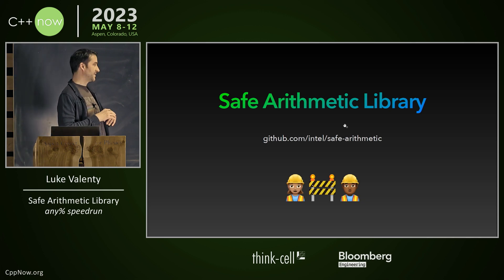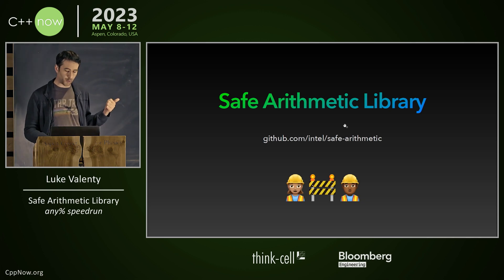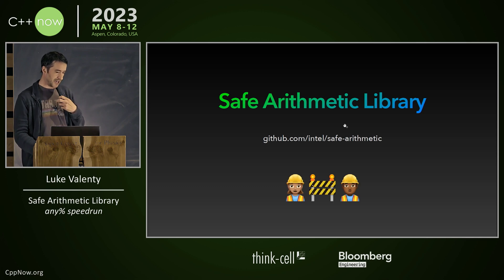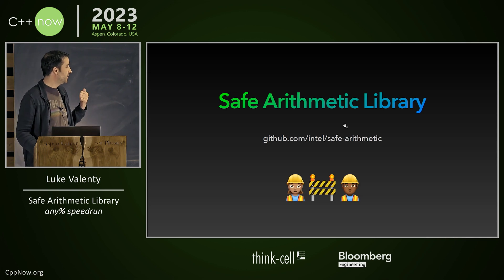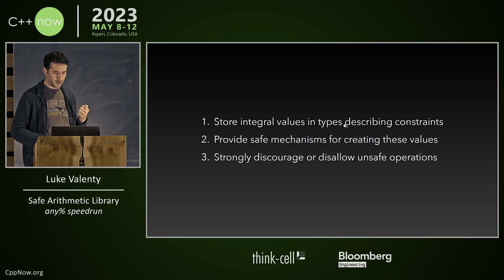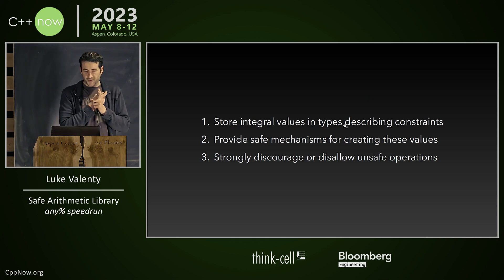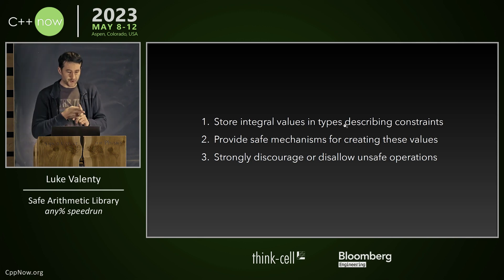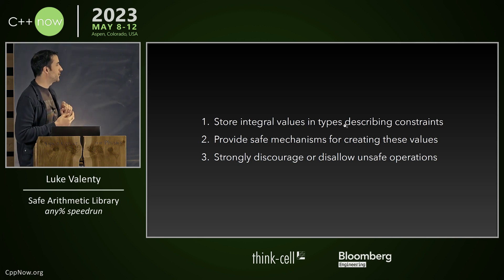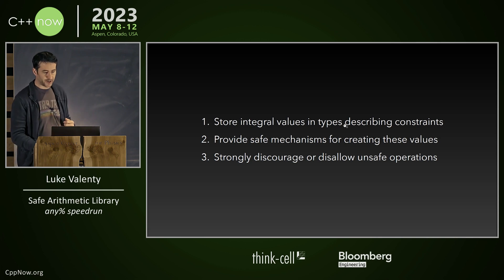This brings in the safe arithmetic library, which is something we're working on. There are a lot of other libraries that do intervals — one by Robert Ramey, David Stone, and a few others — and they're excellent. We just have some different thoughts here. We want to store integral values in types describing constraints, provide safe mechanisms for creating these values, and strongly discourage or disallow unsafe operations.